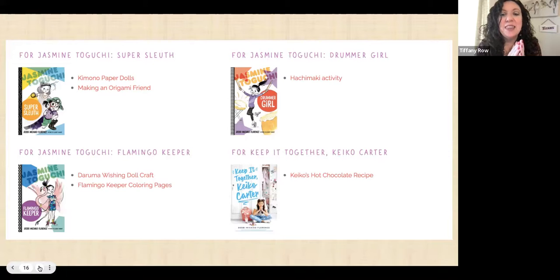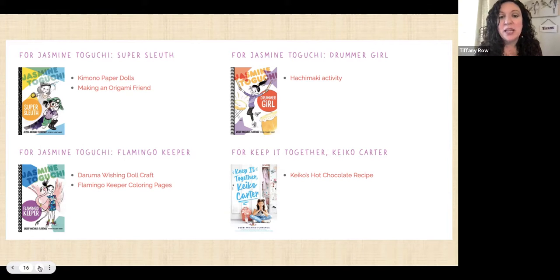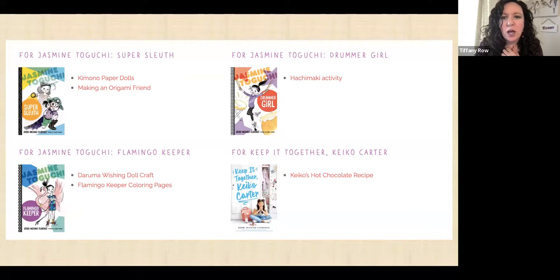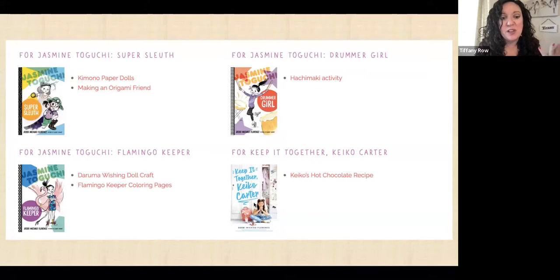On her website you can see more of her books, and she has activities you can do. I love when an author's website has downloadable lesson plans and activities — hers has a lot of really fun ones that relate to the books. There are kimono paper dolls and making an origami friend related to a book called Super Sleuth, and a hot chocolate recipe related to a book called Keep It Together, Keiko Carter. A lot of really fun things that kids would enjoy, and you don't have to come up with all of the ideas yourself.